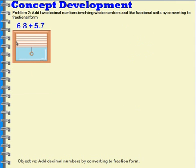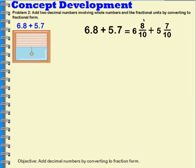Let's try this one: 6.8 plus 5.7. So here I have 6 and 8 tenths plus 5 and 7 tenths. I want to think about this in fraction form. So this is what it would look like: 6 and 8 tenths plus 5 and 7 tenths. Now when I add this together, I need to add my ones, which would be 11, and then I can add my tenths, which would be 15. So it would be 11 ones and 15 tenths.